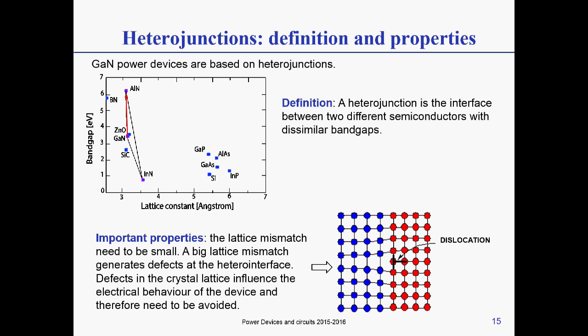In other words, what we want is a heterojunction, ideally a heterojunction with a big band gap discontinuity, but a small lattice constant mismatch. And if you look at the gallium nitride, aluminum nitride, it gives us exactly what we want. So going from GaN to aluminum nitride, you have a big band gap discontinuity, and the lattice constant mismatch is contained.